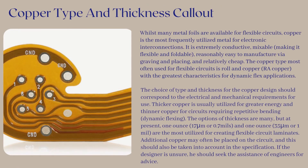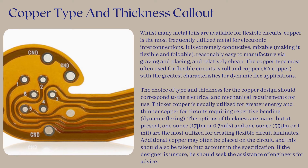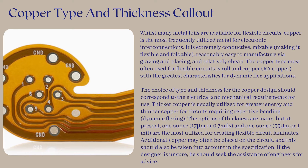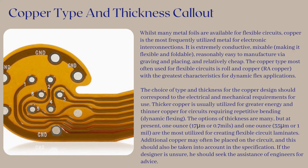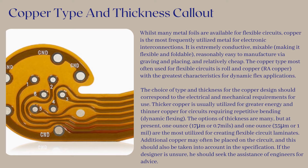Copper type and thickness call-out: whilst many metal foils are available for flexible circuits, copper is the most frequently utilized metal for electronic interconnections. It is extremely conductive, malleable — making it flexible and foldable — reasonably easy to manufacture via engraving and plating, and relatively cheap. The copper type most often used for flexible circuits is rolled annealed copper, RA copper, with the greatest characteristics for dynamic flex applications.